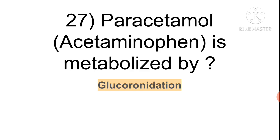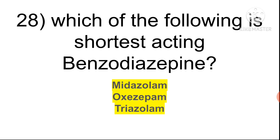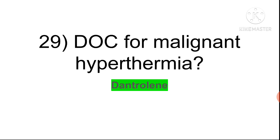Question twenty-seven: paracetamol (acetaminophen) is metabolized in the liver by glucuronidation. Question twenty-eight: the shortest acting benzodiazepines are midazolam (Dormicum), oxazepam, and triazolam. If midazolam is present in the options, click it — it is most often the answer.